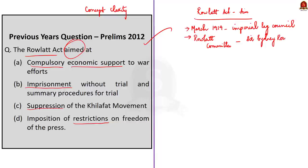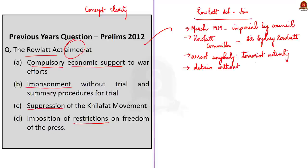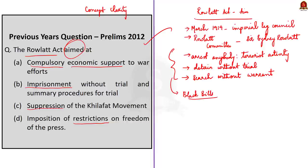The Rowlatt Act authorized the British government to arrest anybody suspected of terrorist activities and to detain such people for up to two years without trial. The act also empowered police to search a place without a warrant and placed severe restrictions on the freedom of the press. Due to these provisions, the act was widely condemned by Indian leaders and the public, and the bills came to be known as the black bills. Based on this, the right answer is option B: imprisonment without trial and summary procedures for trial.